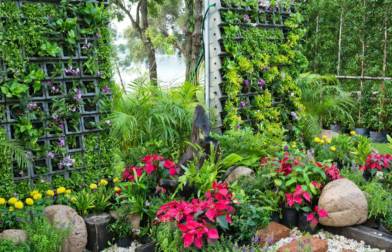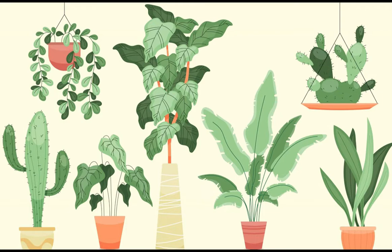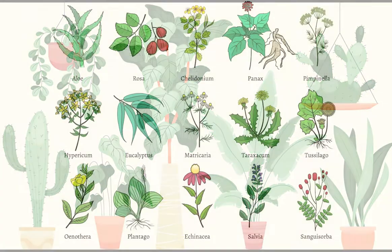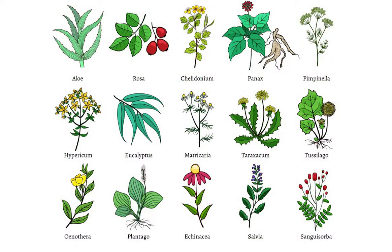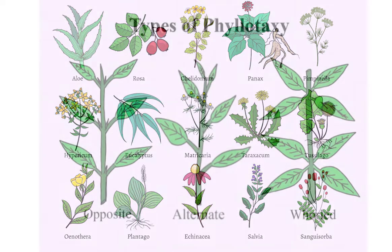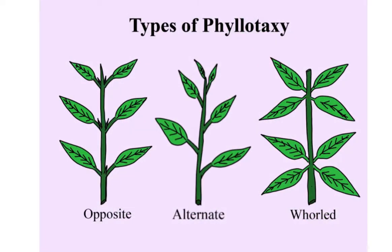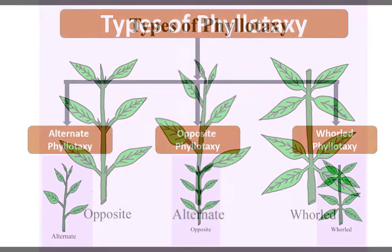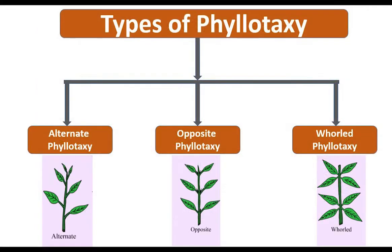Now try to observe Phyllotaxy arrangement in your garden. When you try to observe Phyllotaxy in a plant, you may find different arrangements in different plants. That is because there are different ways in which leaves can be arranged on a stem.